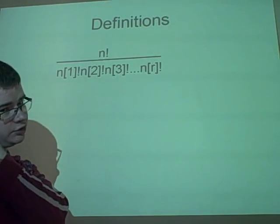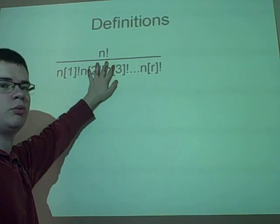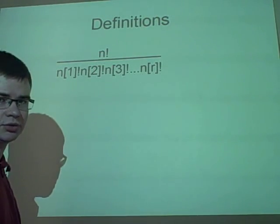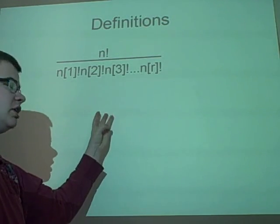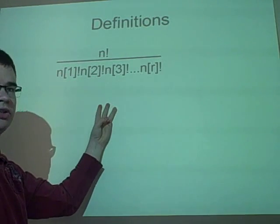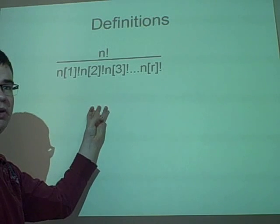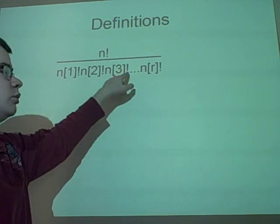So, first off, a definition. This is what you use for finding the number of ways things can be laid out. Say you have three objects and you want to find in how many different ways can they be rearranged. So, you have three factorial over, now each of the objects can only be rotated once. So, one, one, one factorial.